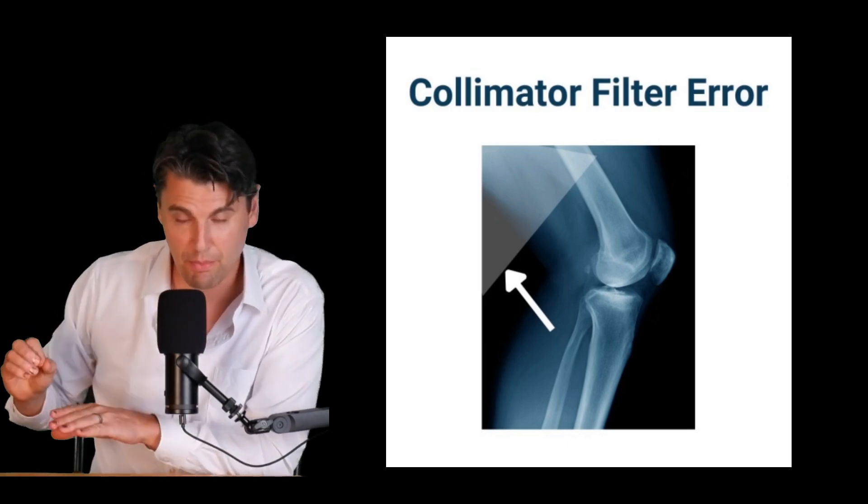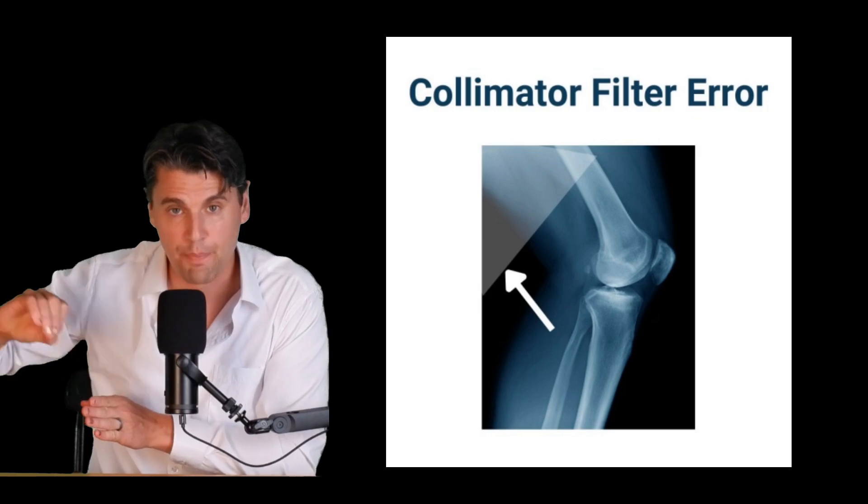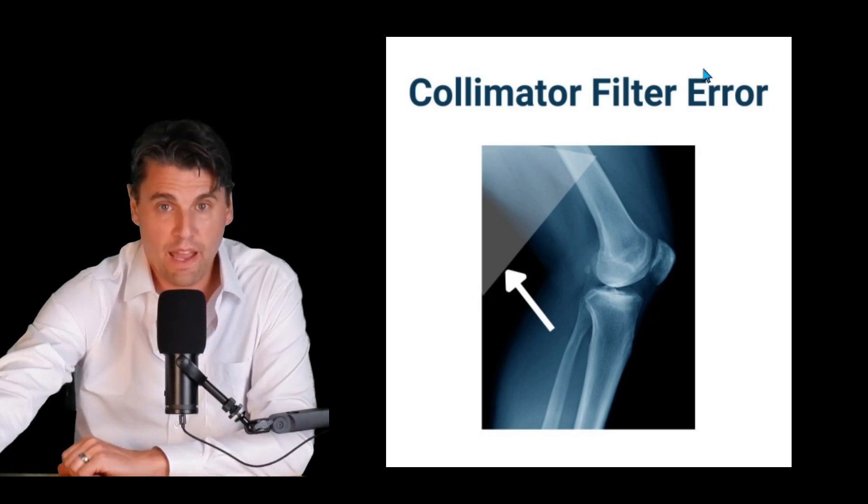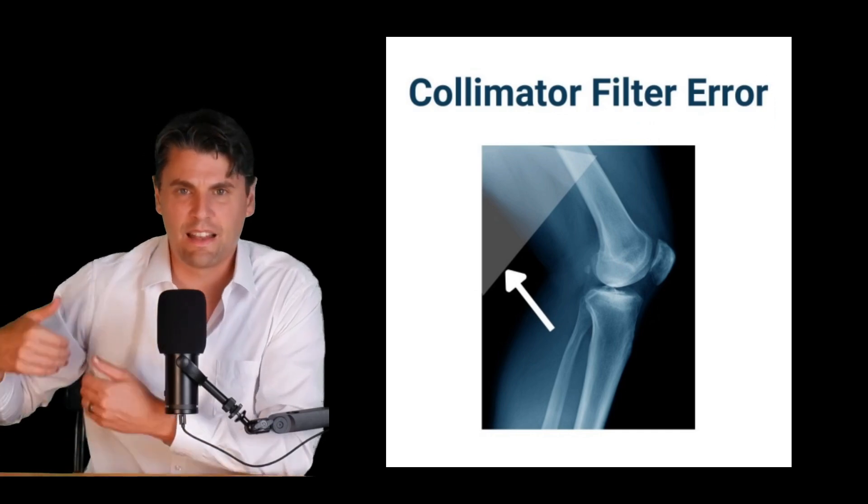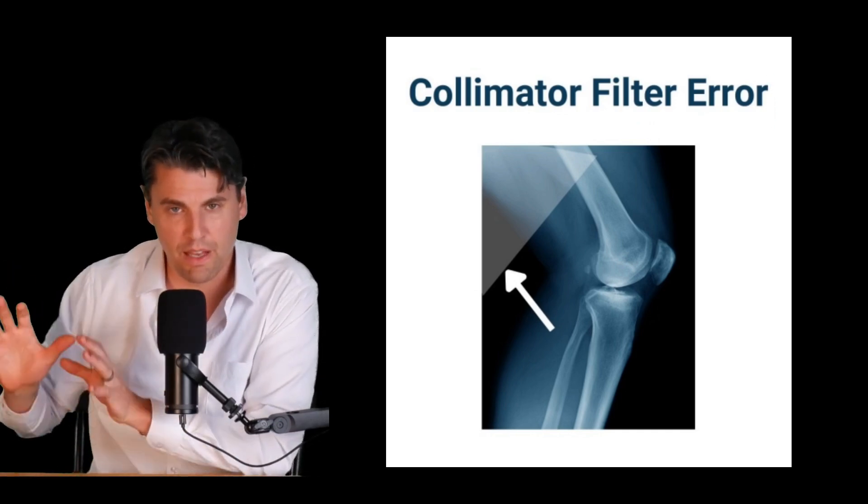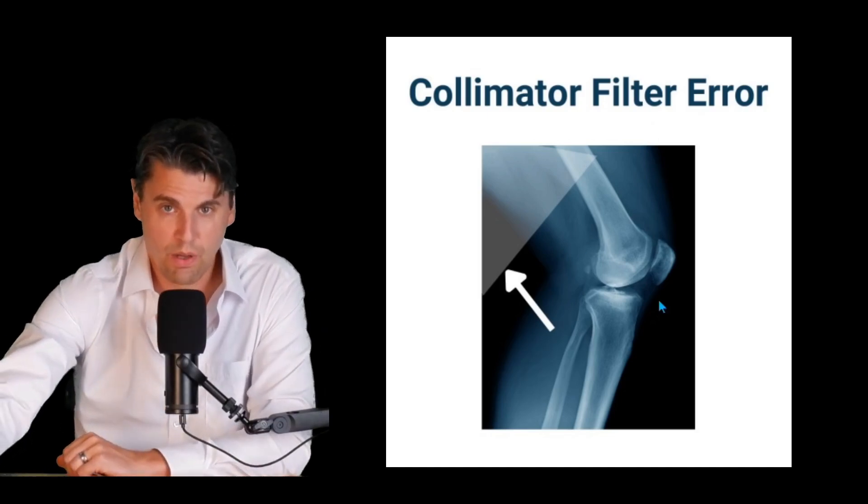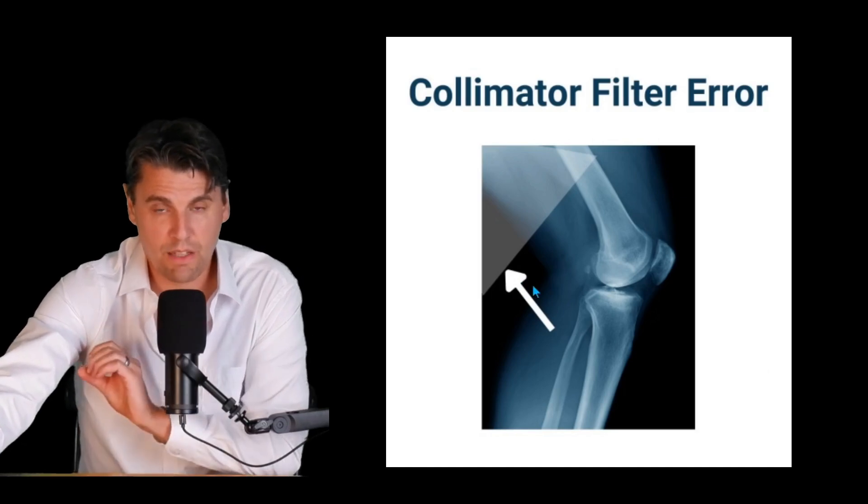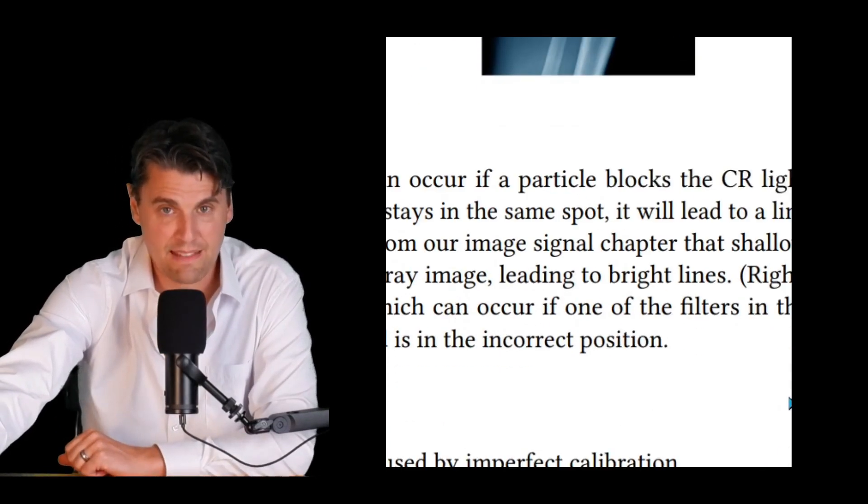If part of the collimator assembly had come loose and it is actually obscuring part of the field of view that could lead to an overlap in your image something like this. Again this is not extremely common but if you see something like this it is the case that you would want to let the manufacturer know that they could come and do quality assurance and potentially make updates to the system as necessary.